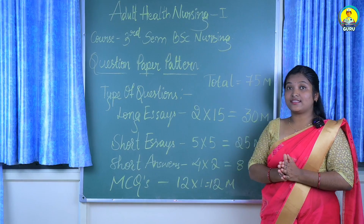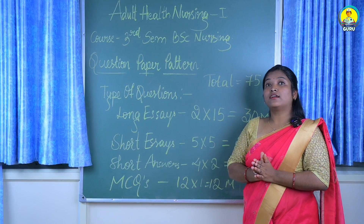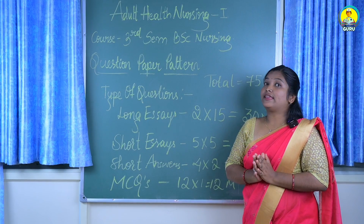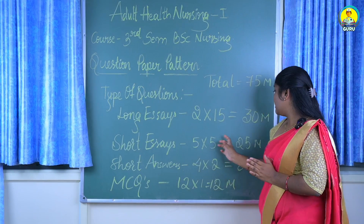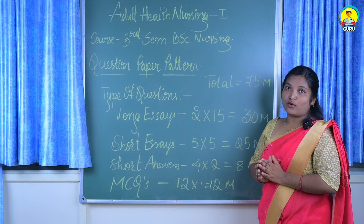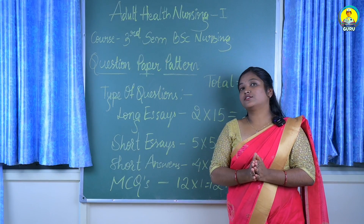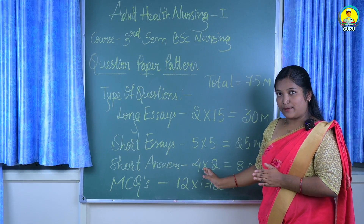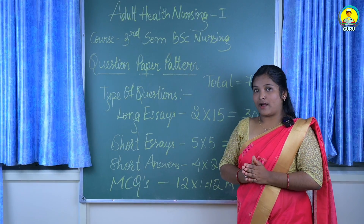The next thing is short essay. When it comes to short essay, we have 5 questions in the question paper and each question carries 5 marks, giving a total of 25 marks we can score in this part. The next thing is short answers — when it comes to short answers, we have 4 questions in the question paper and each question carries 2 marks.